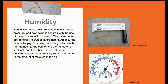Humidity may not be common to many people. Humidity data, including relative humidity, vapor pressure, and dew point, is secured through the use of various instruments. Relative humidity is the ratio of the amount of water vapor actually present in the air to the greatest amount possible at the same temperature. Vapor pressure is the measure of the tendency of a material to change into a gaseous state. These instruments are generally known as hygrometers. An accurate type is a psychrometer, consisting of two similar thermometers — one bulb kept wet and the other dry. The difference between the temperatures they record is related to the amount of moisture in the air.